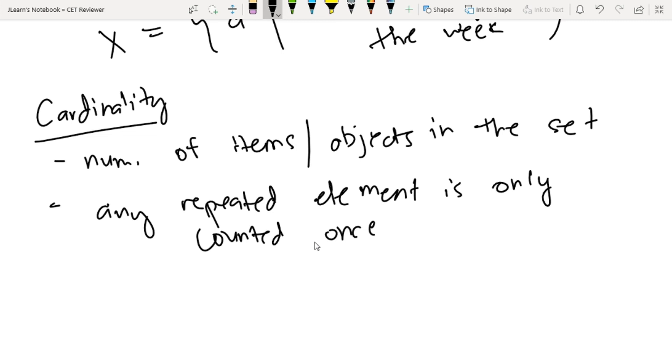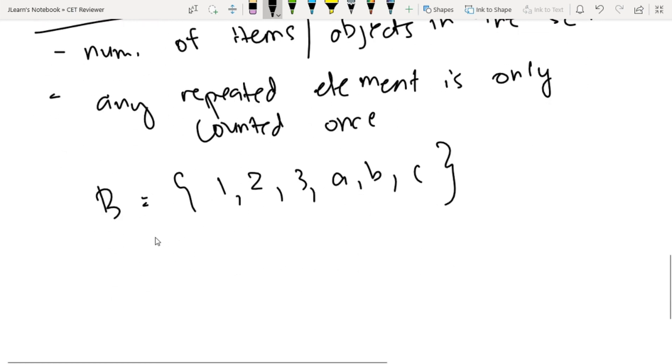For example, I have set B containing 1, 2, 3, a, c. The cardinality of set B - we represent cardinality using bars, then we put the variable or name of the set in the middle. How many items are in B? We have 1, 2, 3, 4, 5, 6, so the cardinality of B is 6. We can also represent cardinality using n, so n(B) equals 6.